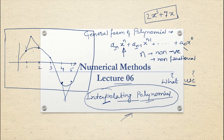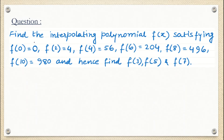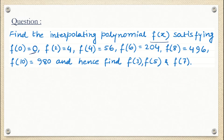Now we will see a question based on interpolating polynomial. Find the interpolating polynomial f(x) satisfying: f(0) = 0, f(2) = 4, f(4) = 56, f(6) = 204, f(8) = 496, f(10) = 980, and hence find f(3), f(5), and f(7). Some values are given — these are the true values — and we are asked to estimate the values at intermediate points.